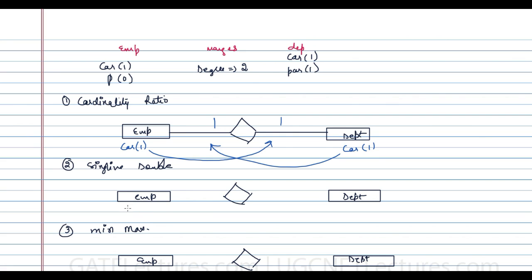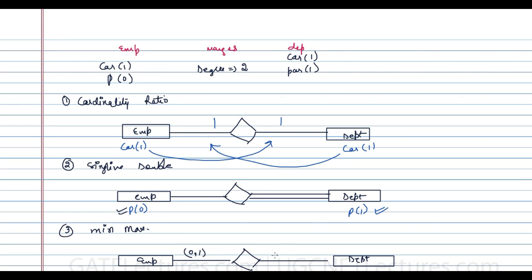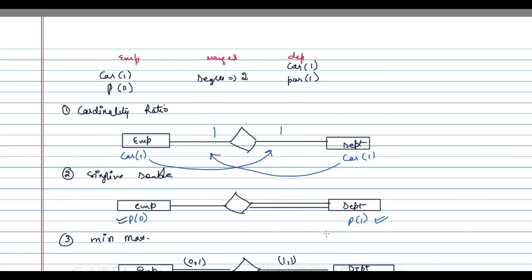For the single line/double line representation, which deals with participation: the participation of employee is zero, so employee does not have total participation and gets a single line. The participation of department is one, so department has total participation and gets double lines. For the min-max representation: employee is (0,1) and department is (1,1).